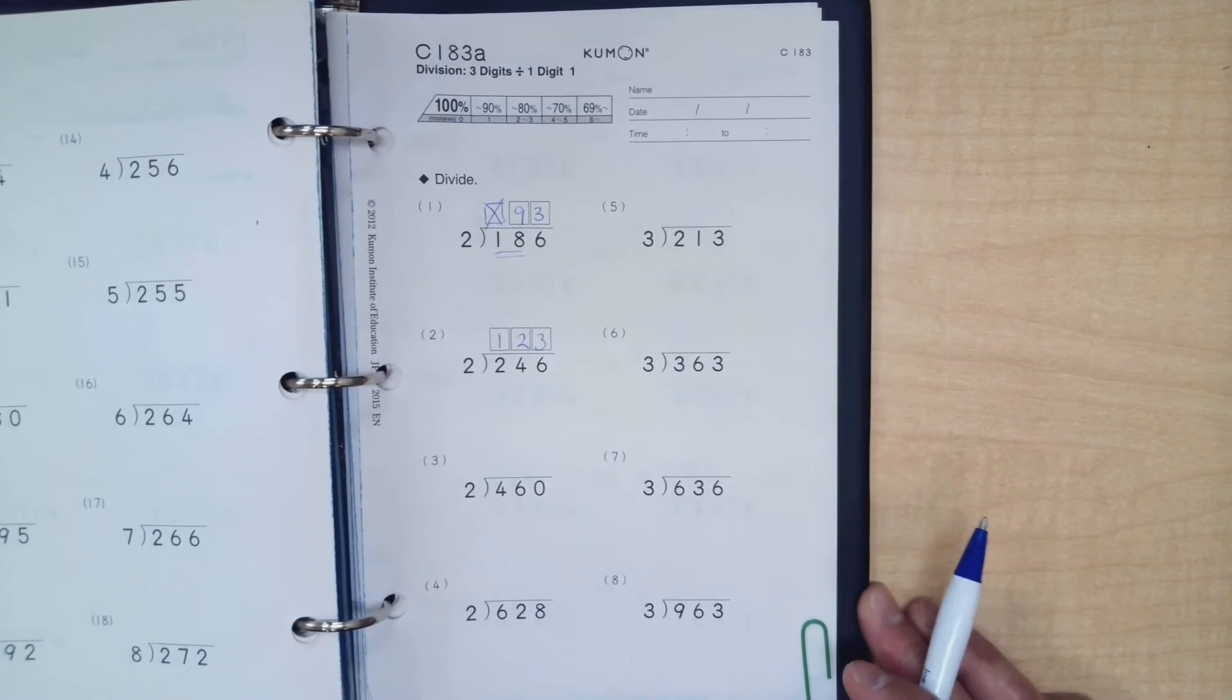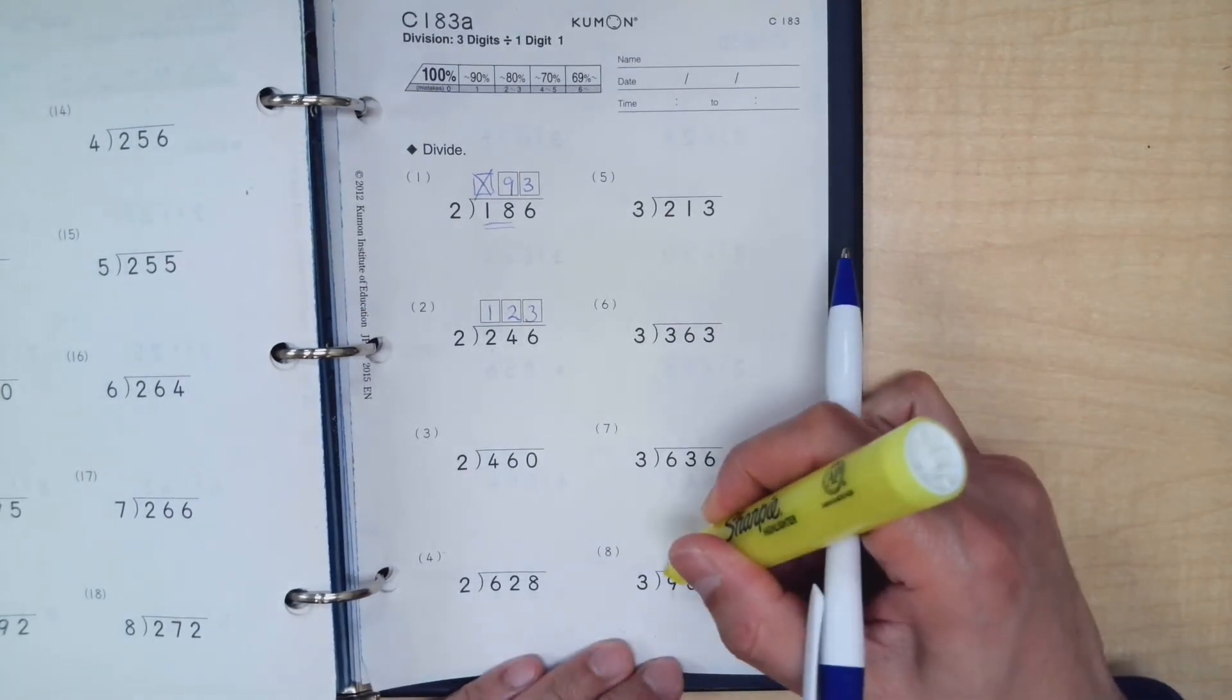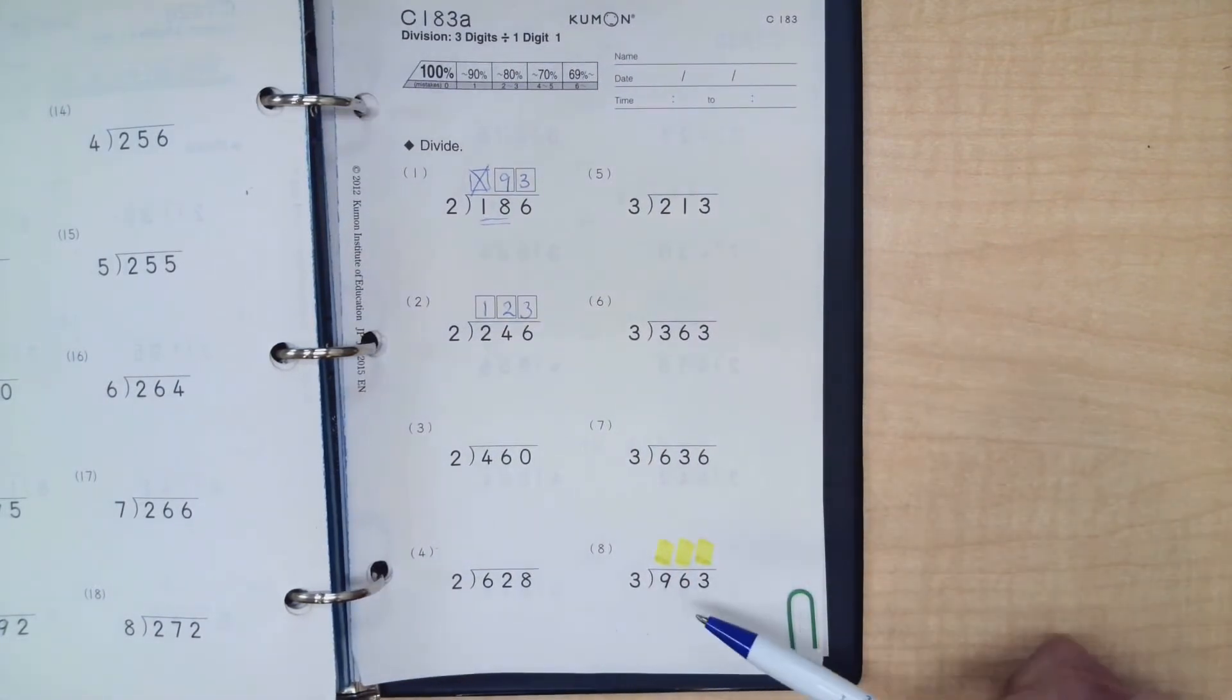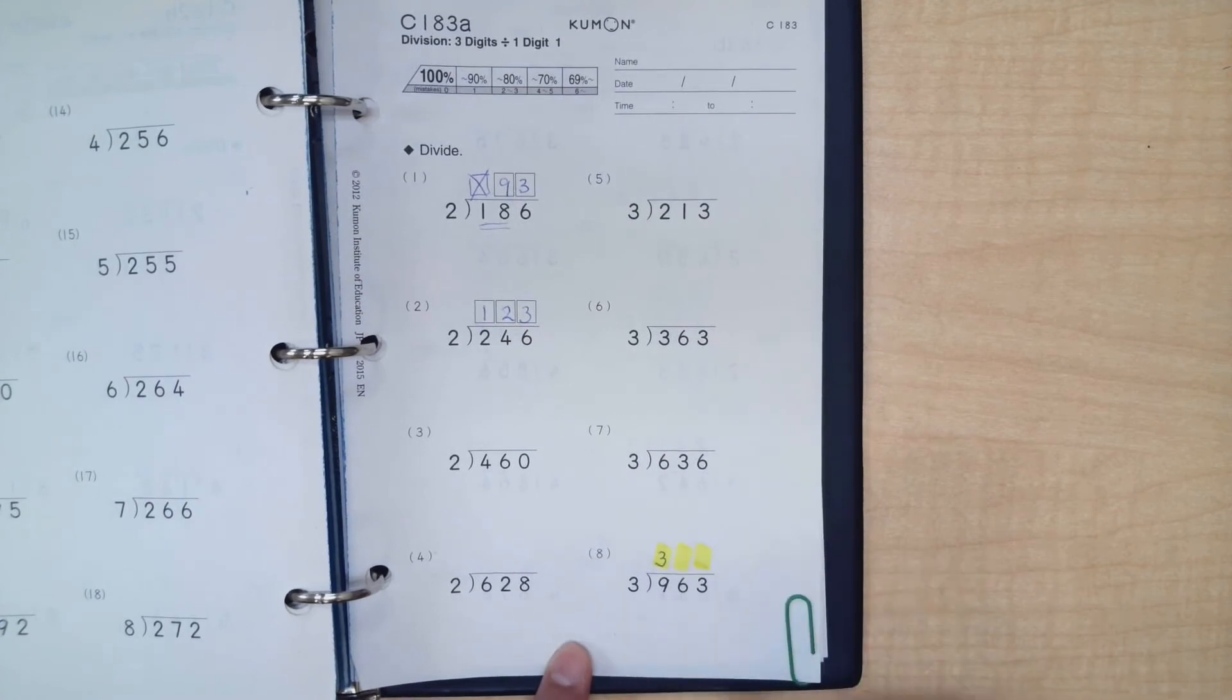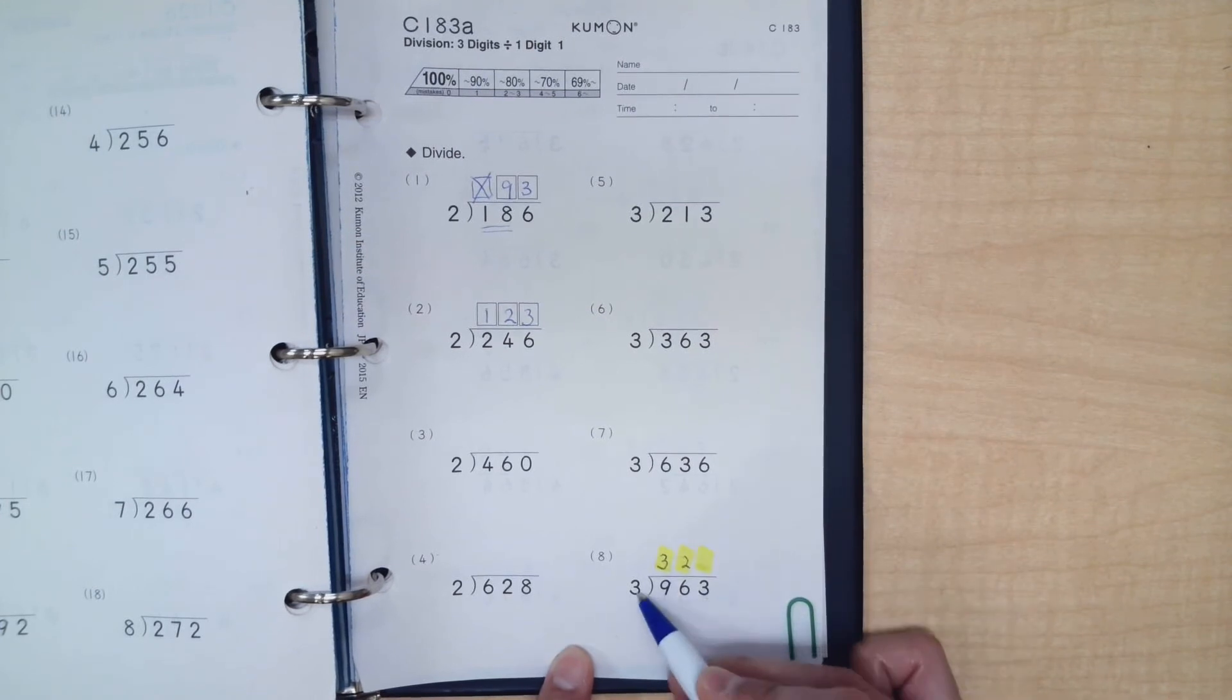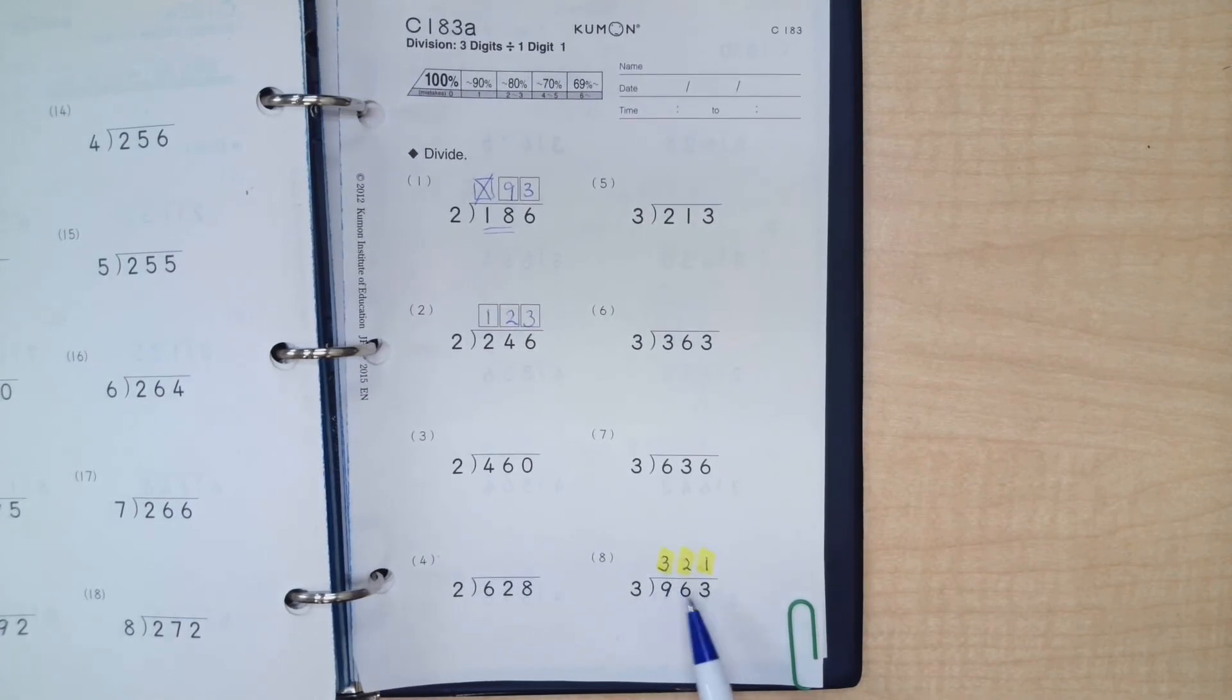Let's jump down here to number eight, which is supposed to be the most difficult problem on this page. Let's imagine once again that there are three spaces right above each one of these. Let's see. Do we need to use the first space? Can the three go into nine? Yup. So the question is how many times? We figure that out by doing our division. What's nine divided by three? It's three. What's six divided by three? It's two. What's three divided by three? It's one. So the answer to nine hundred sixty-three divided by three is three hundred twenty-one.